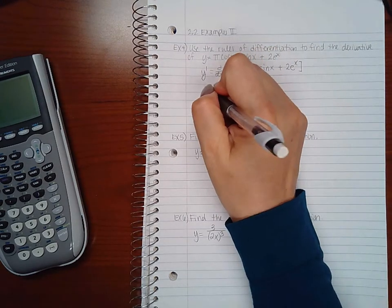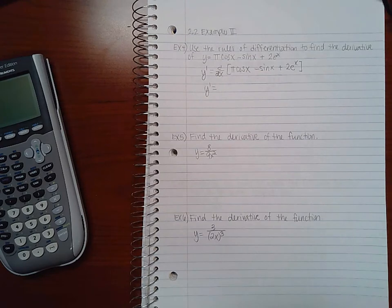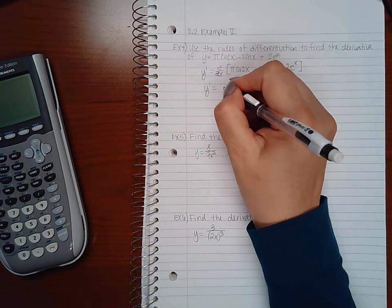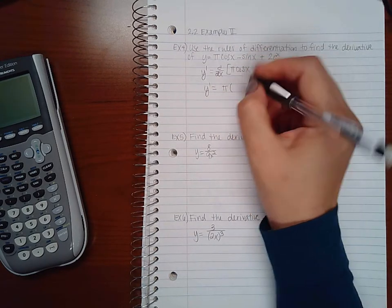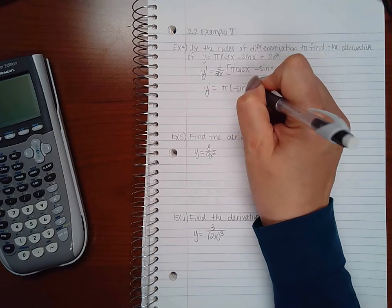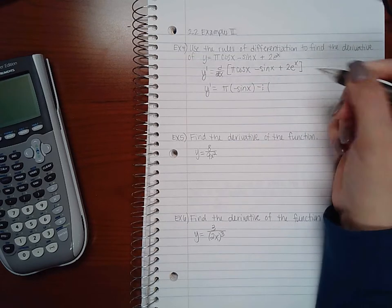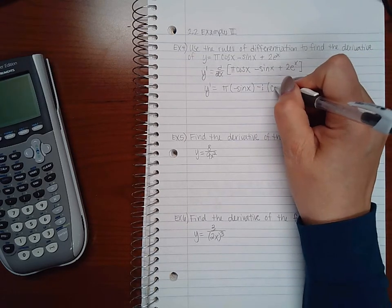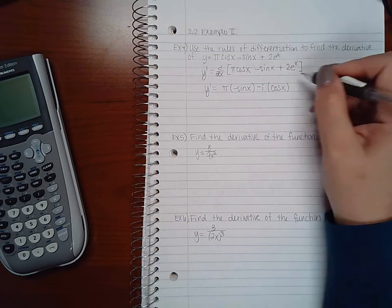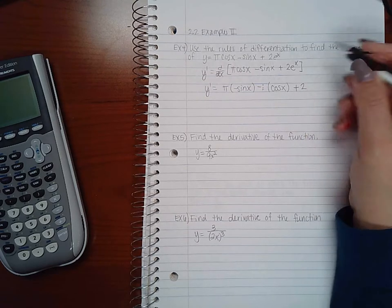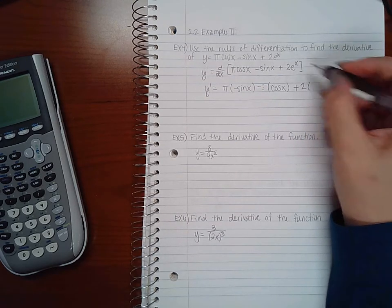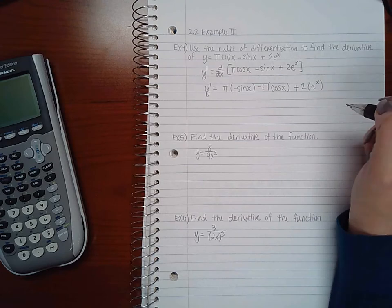Now that I'm taking the derivative, this is a constant multiplier, and the derivative of cosine is negative sine x. This is a constant multiplier, an invisible one coefficient. The derivative of sine is cosine x. Here's another constant multiplier, and the derivative of e^x is still e^x.